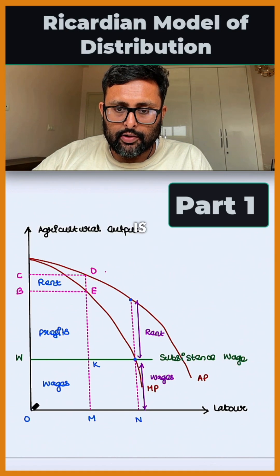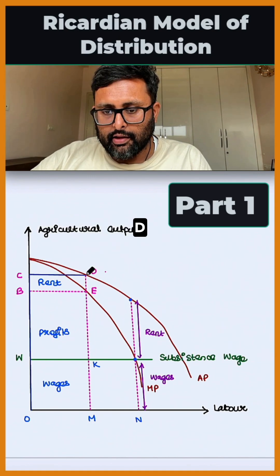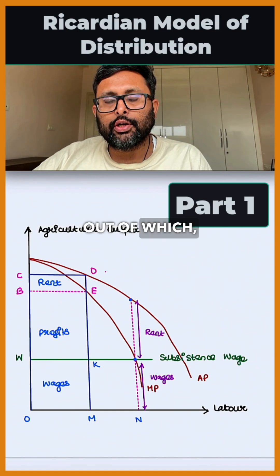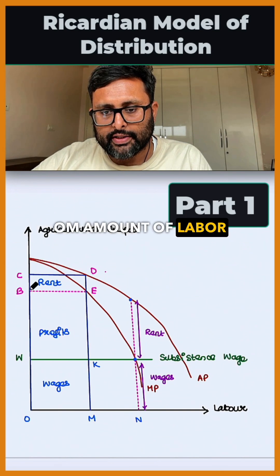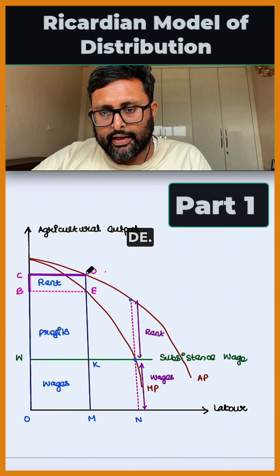Total output produced is OCDM. Out of which total rent for OM amount of labor is DCDE.